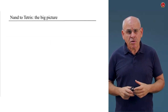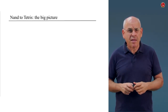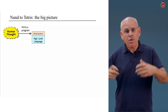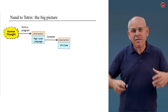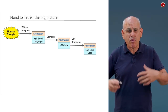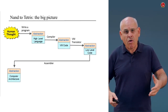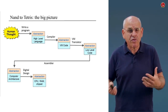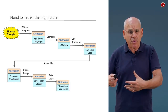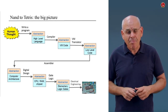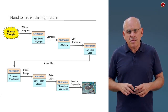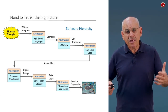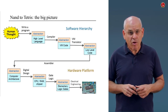Here is the general picture of this course — I'm basically repeating things that Noam said before. We start with some general idea of a program that we want to write. We write the program, we compile it, we translate it further into machine language. We load the code into our computer. The computer uses all sorts of chips that we built, which are based on elementary logic gates. And the whole thing ends up with the hardware itself. Basically, what we did is we built a software hierarchy that sits on top of some hardware platform.